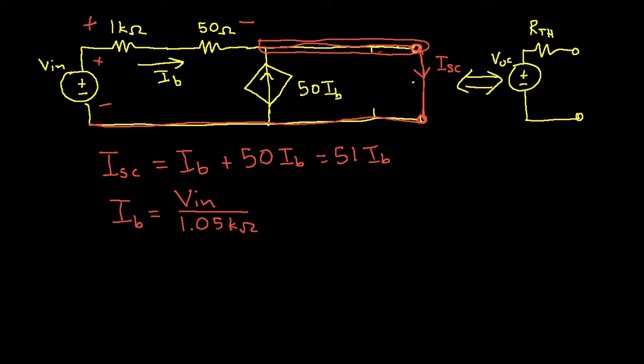So now we can take this expression for I sub B and plug it into our equation for ISC. And we get the following. ISC is 51 times VN divided by 1.05k ohms. And when we work this out, we get 0.0486 VN. So that's an expression for ISC.